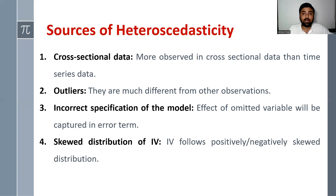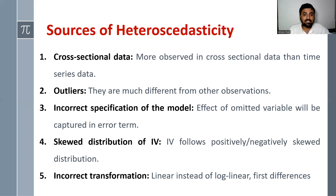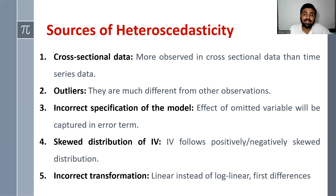Fourth is a skewed distribution of the independent variable — if the independent variable follows a positively or negatively skewed distribution, we might encounter heteroscedasticity. Fifth is incorrect data transformation. Sometimes we transform our data, but if the transformation is done incorrectly — for example, using a linear model or first differences instead of a log-linear model — you are likely to encounter the problem of heteroscedasticity.